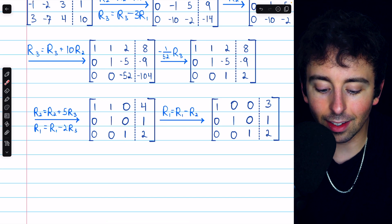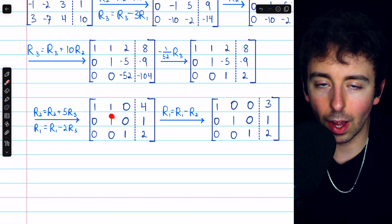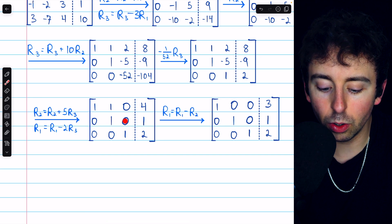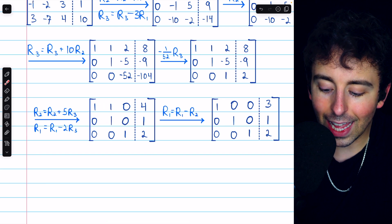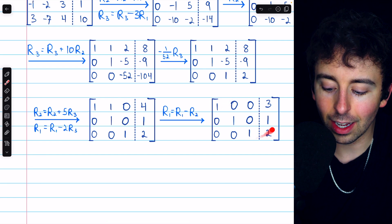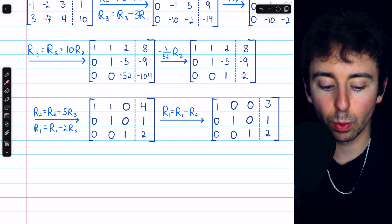Finally, to get a 0 above this 1 on the diagonal, we will subtract row 2 from row 1. And that finally gets us here, exactly the type of matrix we were looking for.